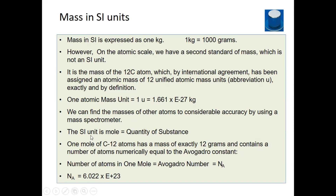The standard SI unit for quantity of substance is the mole. One mole of carbon atoms has a mass of exactly 12 grams and contains a number of atoms equal to Avogadro's number. The mole is basically the atomic or molecular weight expressed in grams or kilograms. The mole for one substance has the same Avogadro's number as the mole for any other substance.